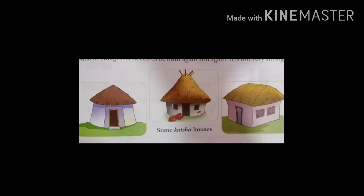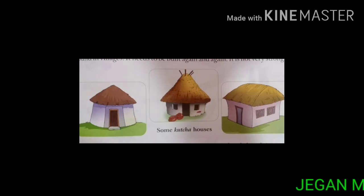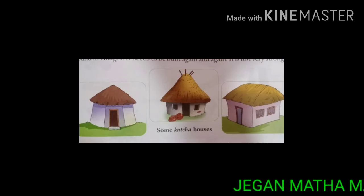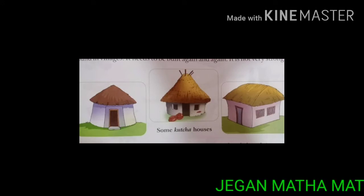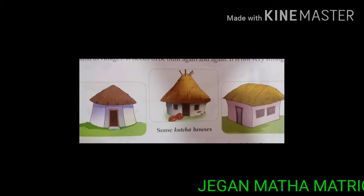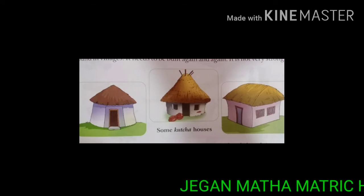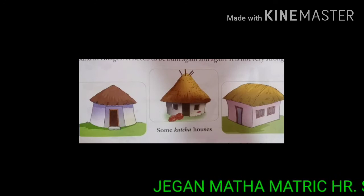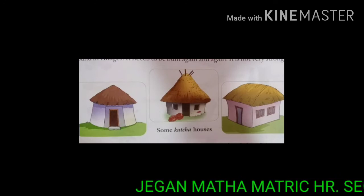See the first one kids — this is called Kacha house. A Kacha house is made of clay, mud, straw and dry leaves. It is mostly found in villages. It needs to be built again and again because it's not very strong. You don't have many rooms also.